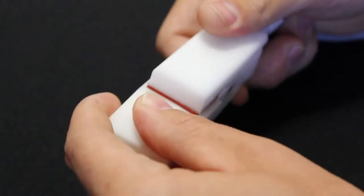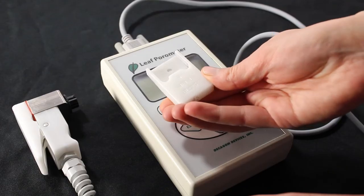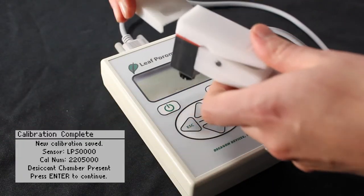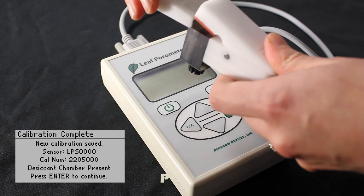Again, do this part quickly to prevent the chamber from reading the ambient air. This process will be repeated until three consecutive measurements are all within 7.5% of each other. This usually will occur after three to five readings.